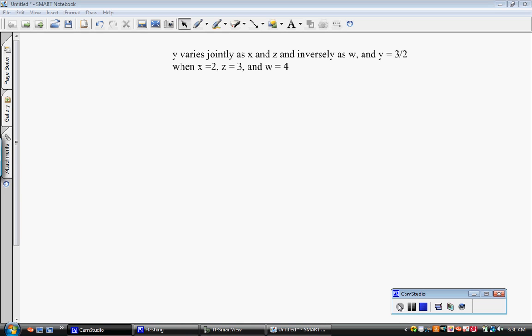Sometimes there can be things as combined variation of some sort. If you notice in this problem, it says y varies jointly as x and z and inversely as w. So you've got two things going on.